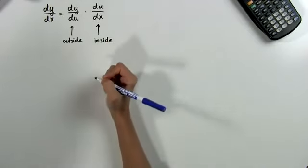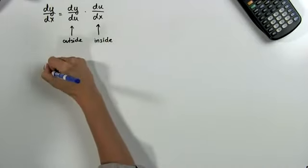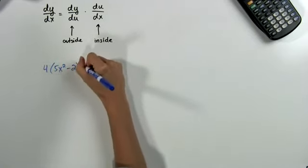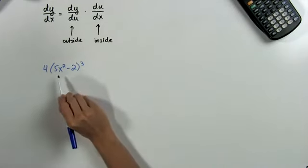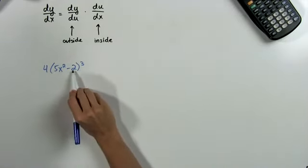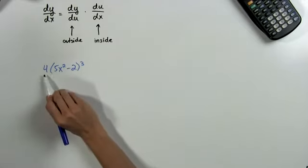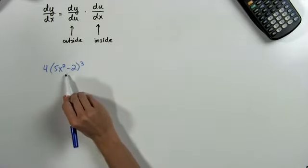So let's say we have one function inside another one like 4 times 5x squared minus 2 all cubed. The inside function here is 5x squared minus 2, it's in the parentheses, and the outside function is just 4 times something else, the inside function cubed.